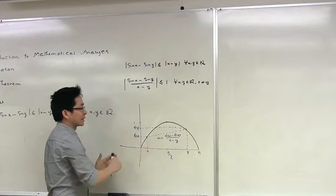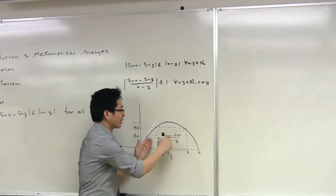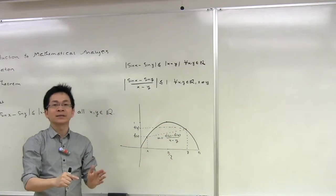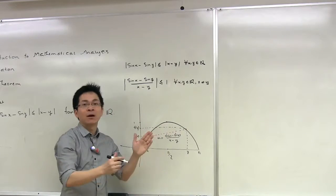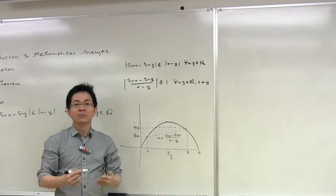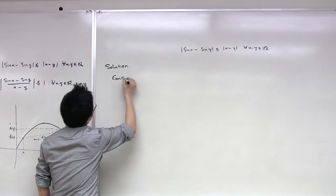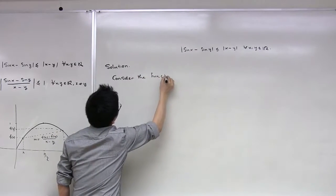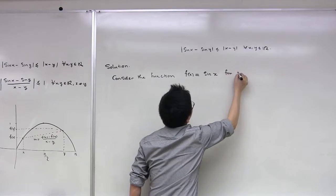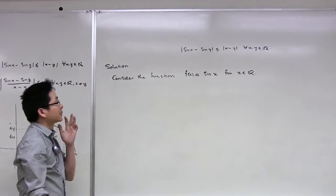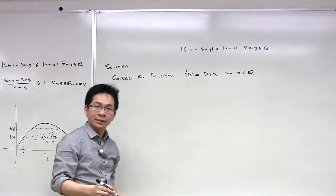Note that if this is x then this is f(x), and if this is y then this is f(y). Then the slope of the secant line connecting these two points is f(x) minus f(y) over x minus y, and we are going to show that the absolute value of this slope is less than or equal to 1. Now consider the function f(x) = sin(x) for x in R. Observe that if x equals y, then the inequality is satisfied trivially because both sides are 0.